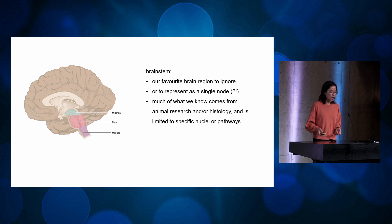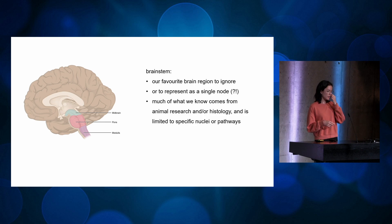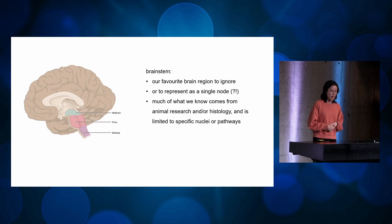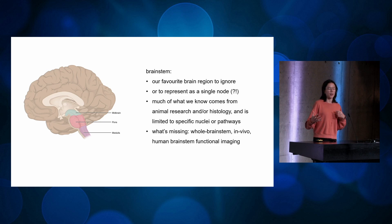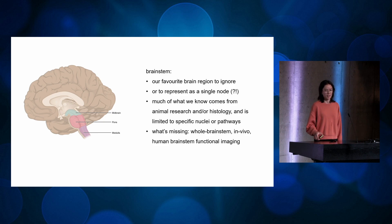Much of what we know comes from animal work, lesion studies, and ex vivo brains, and is limited to specific nuclei and pathways. This is great in many cases and tells us a lot about anatomy, but it means we have a big gap in our understanding of brainstem function in the context of living humans. A lot of what we know is biased towards evolutionarily conserved functions.